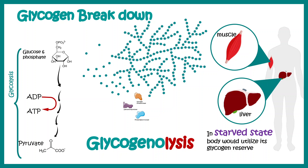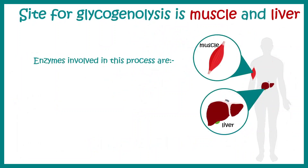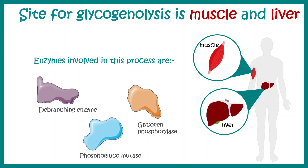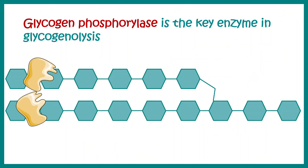In the starved state the body utilizes glycogen reserves to generate energy, so glycogenolysis happens when we are starving. The sites of glycogen storage are muscle and liver, and the enzymes required are glycogen phosphorylase, debranching enzyme, and phosphoglucomutase. Let's understand how these enzymes work, starting with glycogen phosphorylase, which breaks down glycosidic linkages and frees up glucose residues.